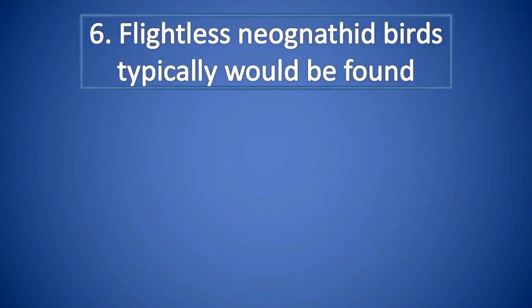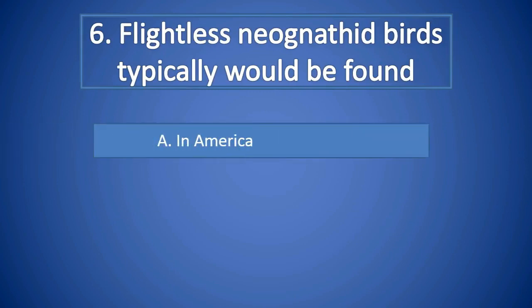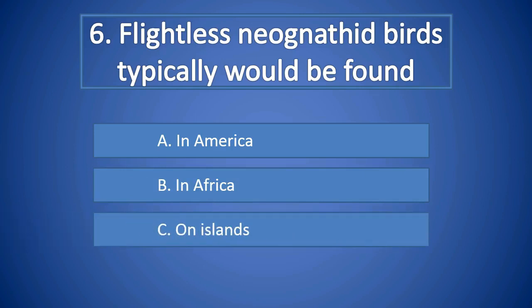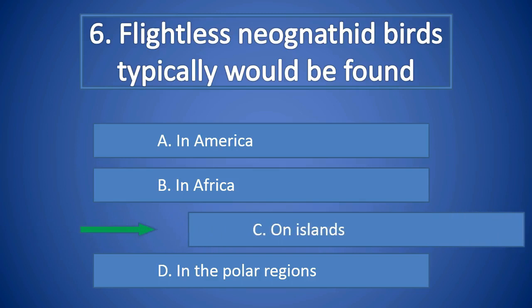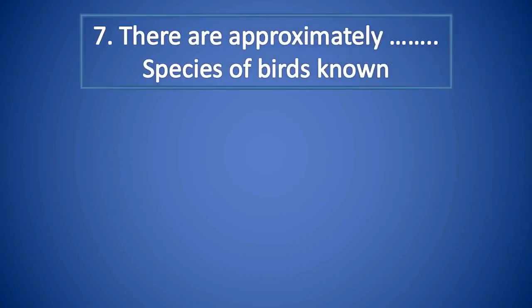Question Number 6: Flightless neognathous birds typically would be found A. In America, B. In Africa, C. On islands, D. In the polar regions. Right answer is C. On islands.